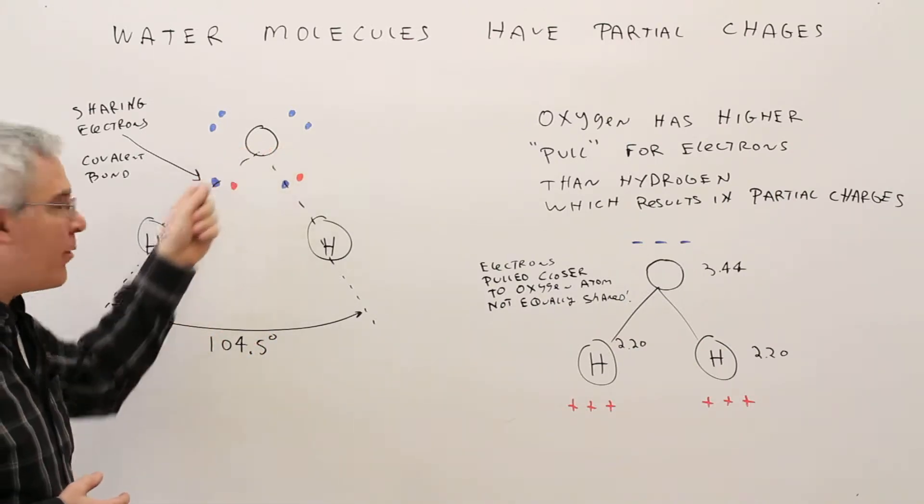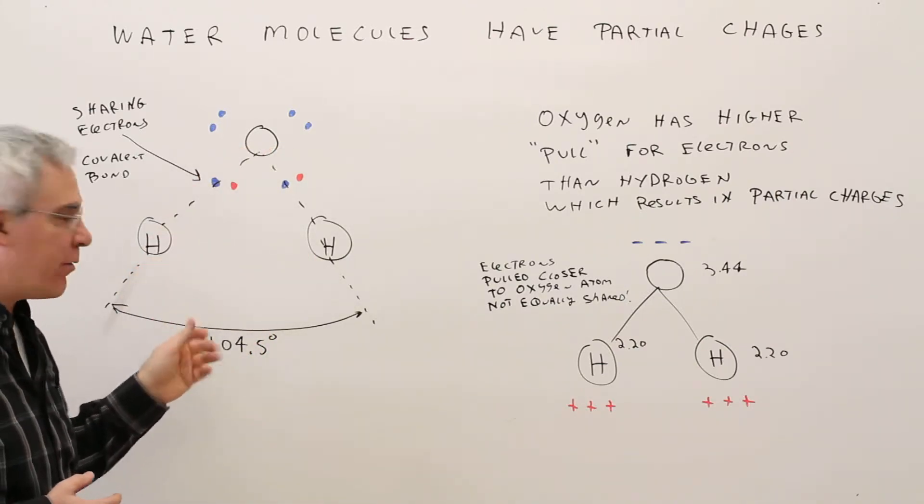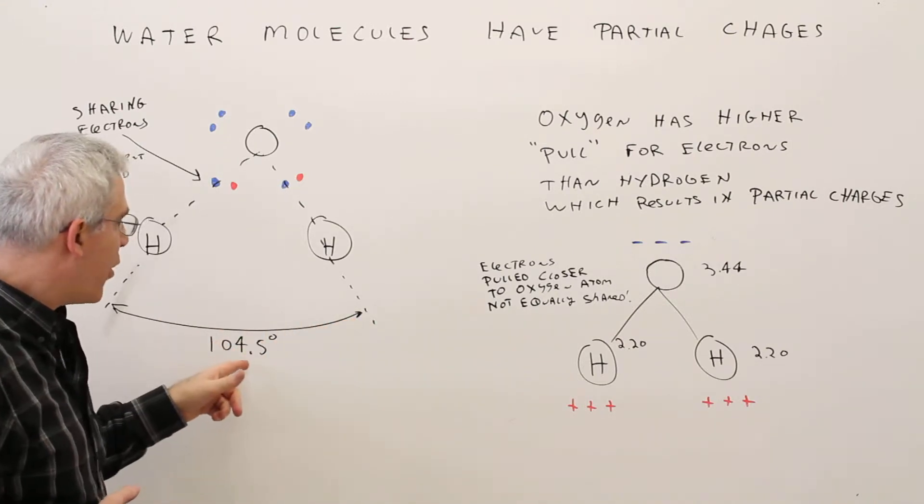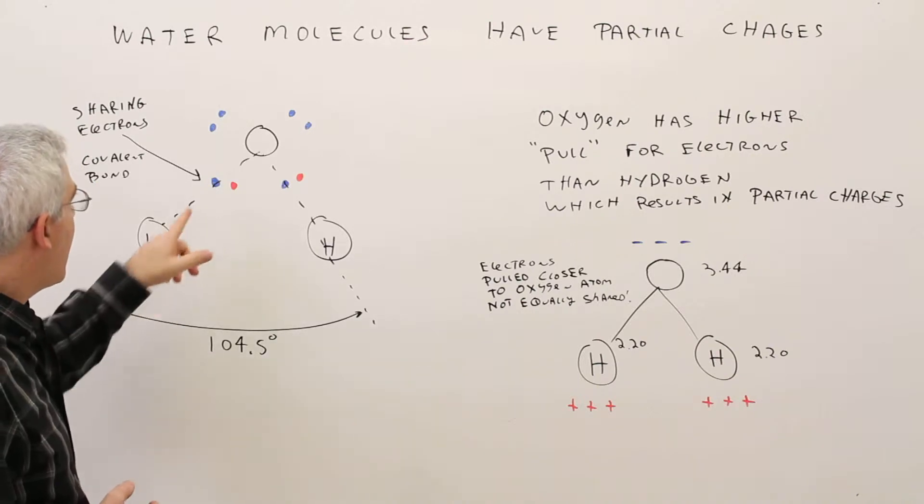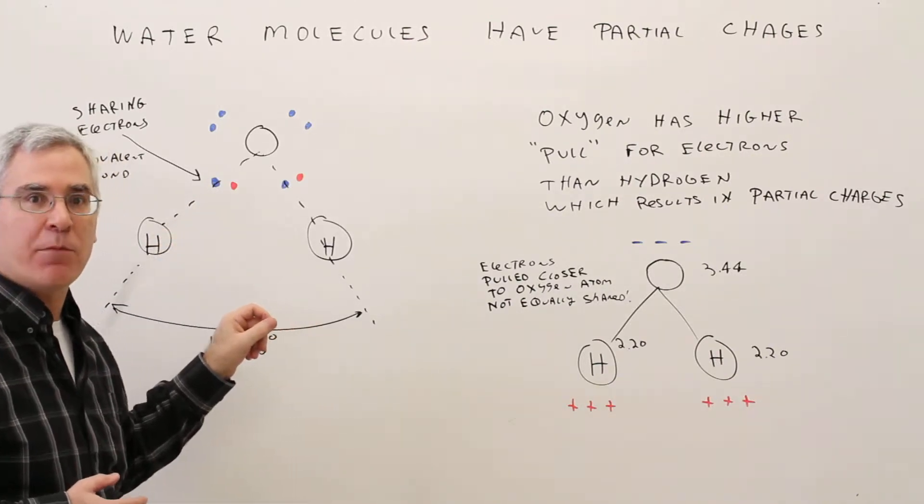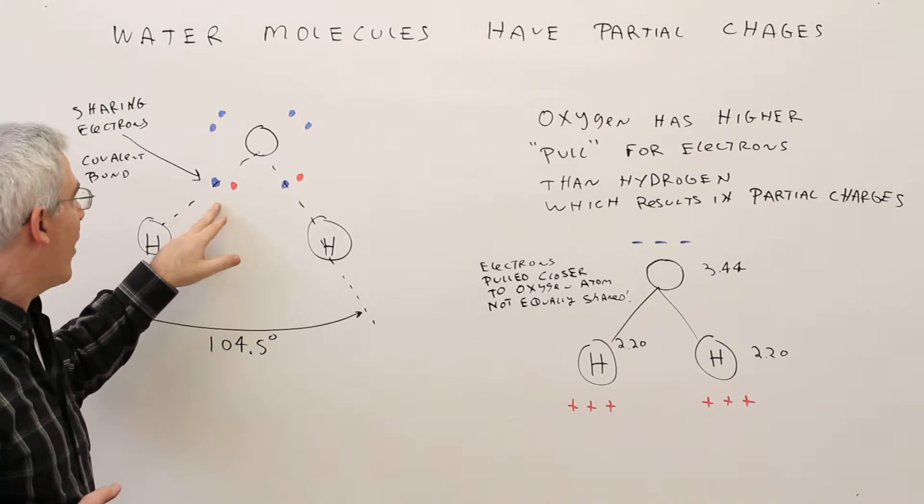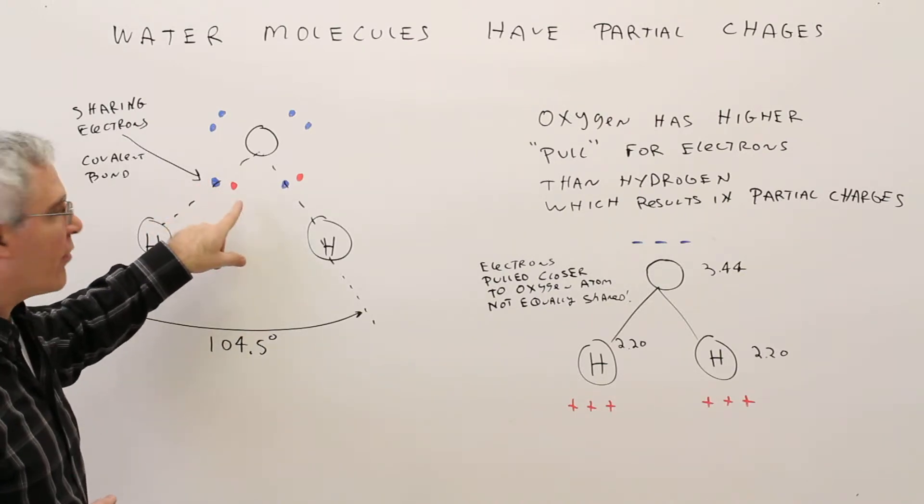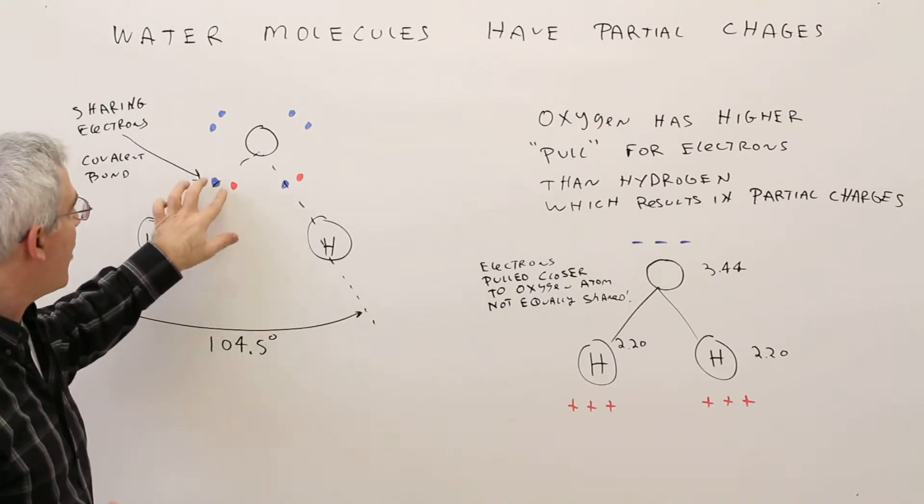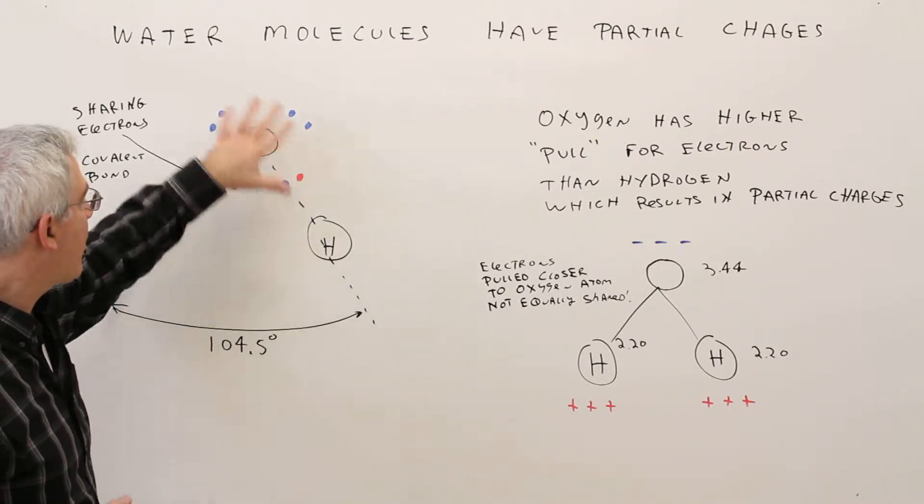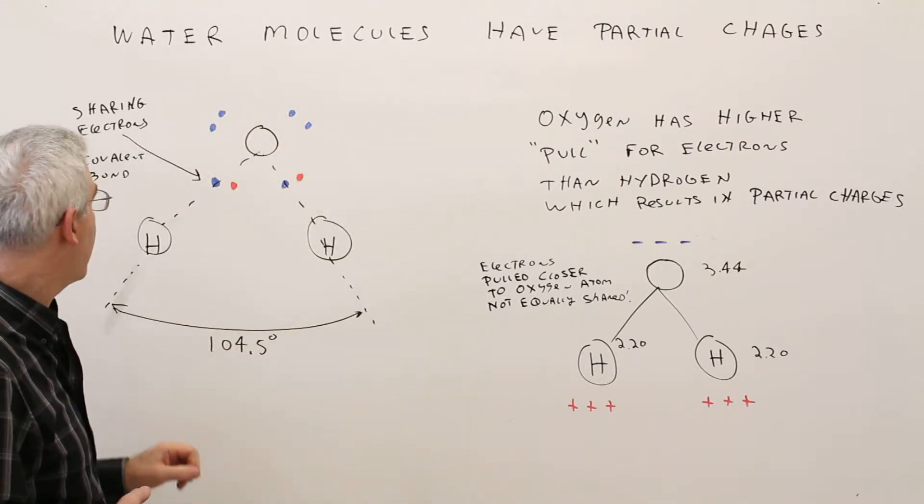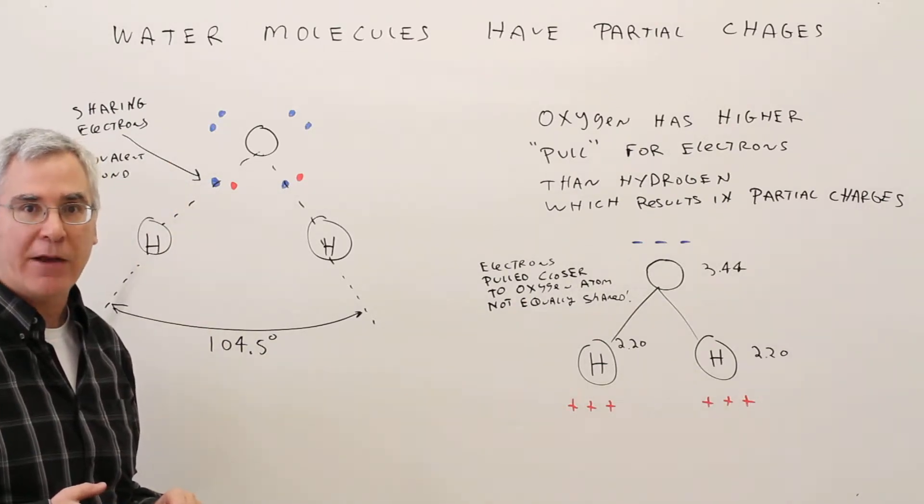It's got one oxygen atom with two hydrogen atoms. The angle is 104.5 degrees between the two hydrogen atoms. And it has covalent bonding, sharing of electrons. So the hydrogen has one electron which shares with the one electron here and vice versa over here to make a stable molecule. Once again, we call that covalent bonding.